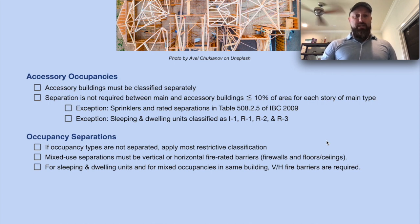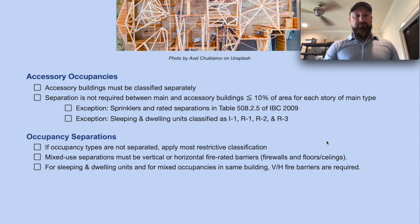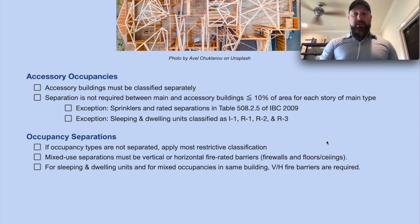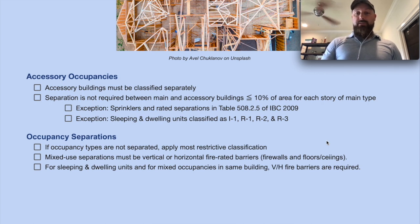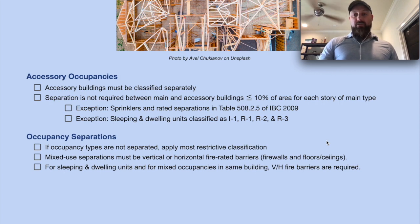The final section for this page is occupancy separations. If the occupancy types are not separated, we must apply the most restrictive classification. Mixed use separations must be vertical or horizontal fire-rated barriers. These are also called firewalls, and horizontal assemblies are our floors and ceilings that are fire rated. For sleeping and dwelling units and for mixed occupancies in the same building, vertical and/or horizontal fire barriers are required.